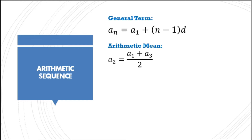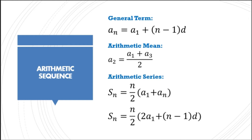For arithmetic series, we have two formulas. The first one — if a sub n is given — we use: S sub n equals (n over 2) multiplied by the quantity (a sub 1 plus a sub n). If a sub n is unknown, we use the second formula: S sub n equals (n over 2) multiplied by the quantity (2 times a sub 1 plus (n minus 1) times d). We use the first formula if a sub n is given, and the second formula if a sub n is unknown.